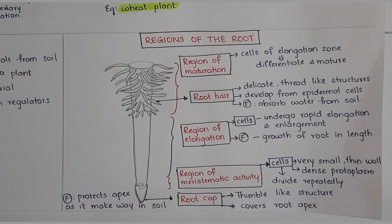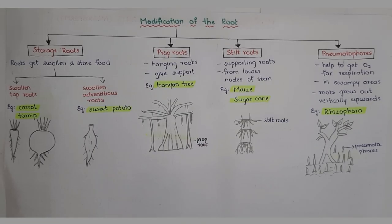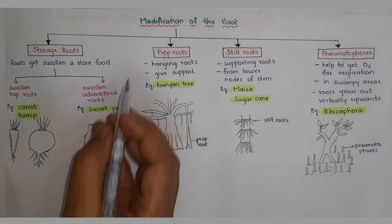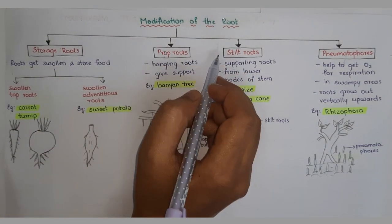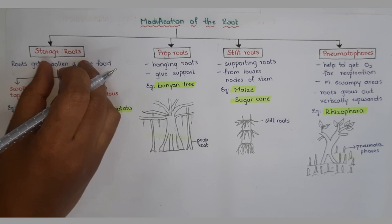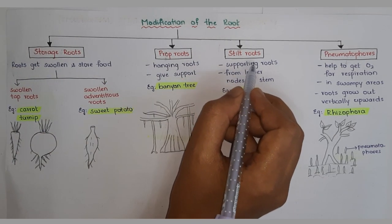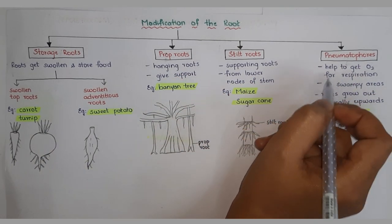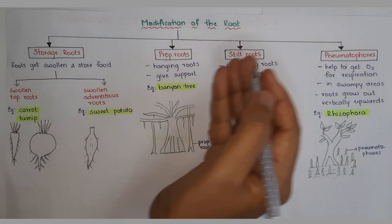Next we will deal with the modifications of roots. Roots in some plants change their shape and structure and become modified to perform functions other than absorption and conduction of water and minerals. They are modified for support, storage of food, and respiration. Storage roots store food; prop roots and stilt roots provide support; and pneumatophores are used for respiration.